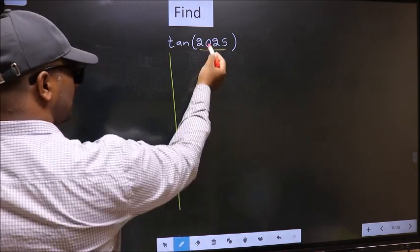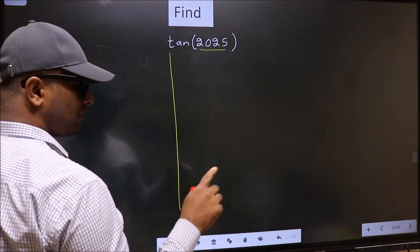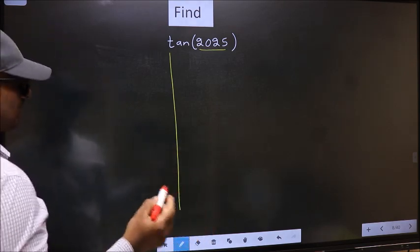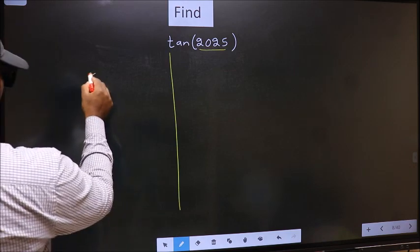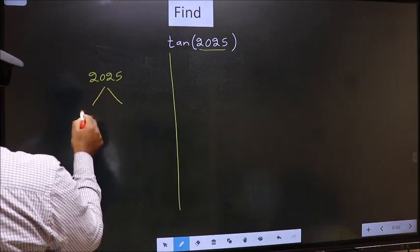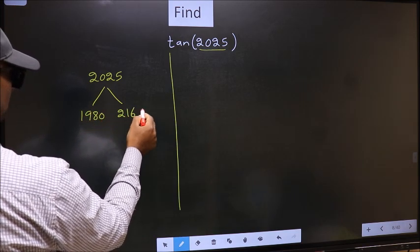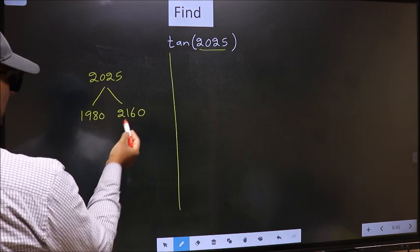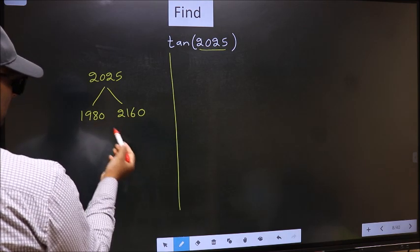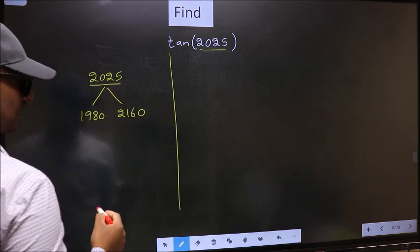Now we should check: 2025 lies between which two multiples of 180? What I mean is, 2025 lies between 1980 and 2160. This is 180 × 11 and this is 180 × 12. Between these two numbers, 2025 lies.